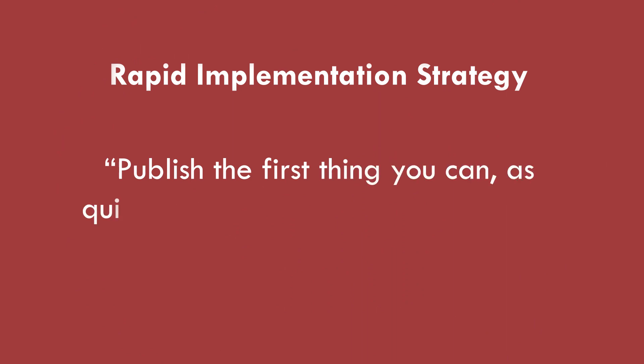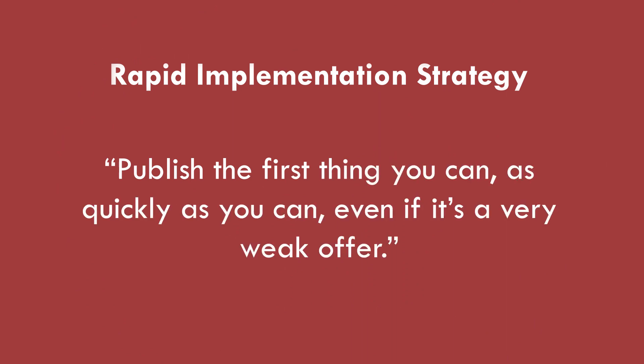The rapid implementation strategy says: publish the first thing you can as quickly as possible, even if it's a very weak offer. Then create a simple opt-in offer and upgrade your form — it goes from 'subscribe to my newsletter' to 'get this free thing.' Then you keep working step by step, making your opt-in form better and your opt-in offer better, while building your mailing list all the way through that process.